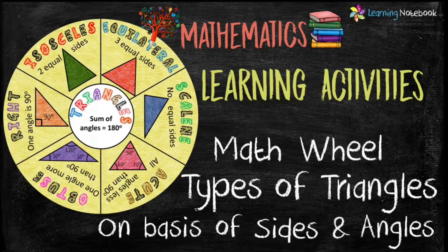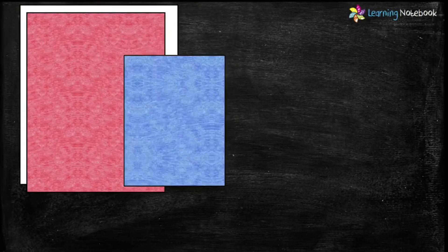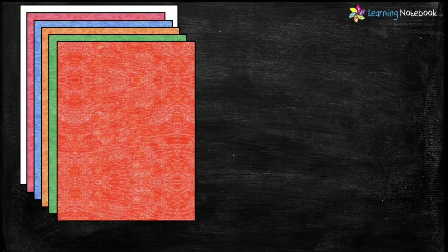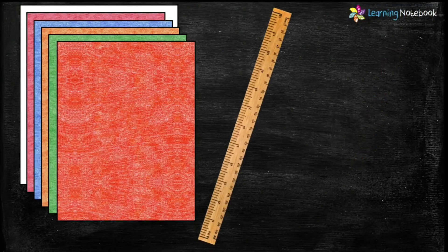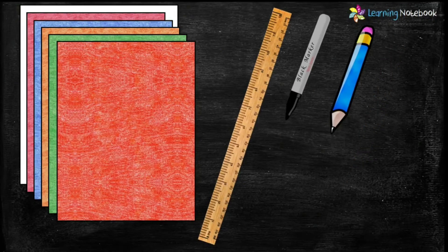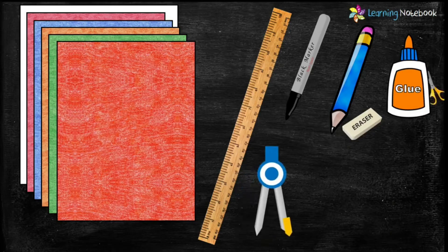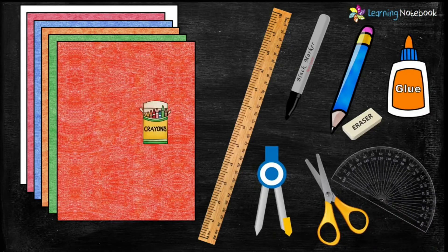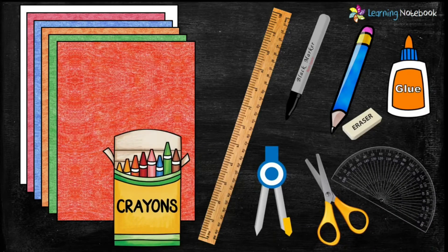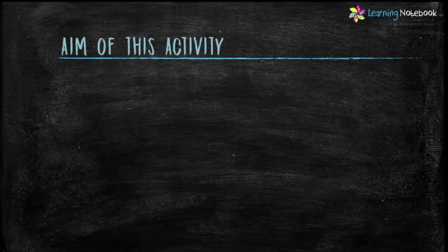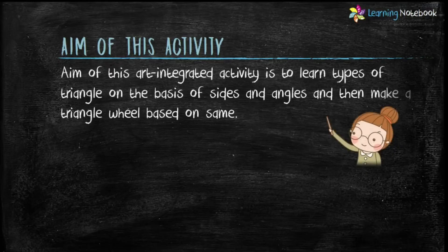For this activity we need one A3 white sheet, few colorful A4 sheets, a ruler, a black marker pen, a pencil and eraser, glue, a compass, pair of scissors, a protractor, and a few crayons. The aim of this art integrated activity is to learn types of triangles on the basis of sides and angles and then make a triangle wheel.